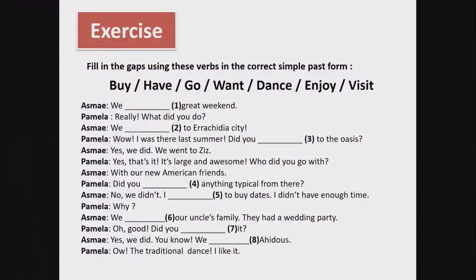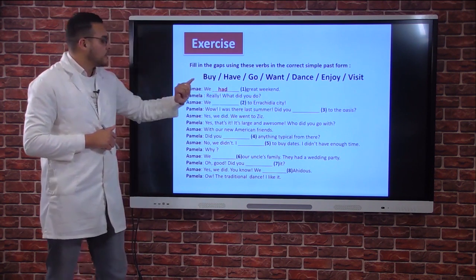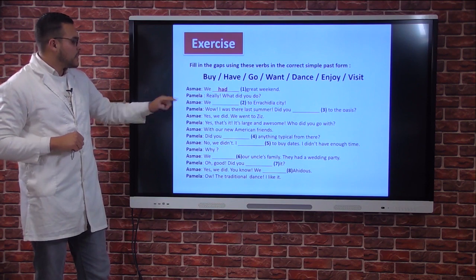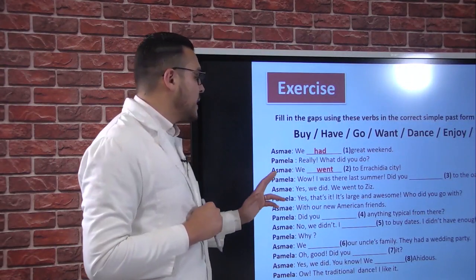I need you to copy this exercise in your copybooks and try to fill in the blanks with the right word in the correct simple past form. It's a dialogue between Esma and Pamela. Esma said: We had a great weekend — using the verb 'to have', so 'had'. Pamela said: Really? What did you do? Number two: We went to Rashidia city — the verb 'to go' in the simple past.